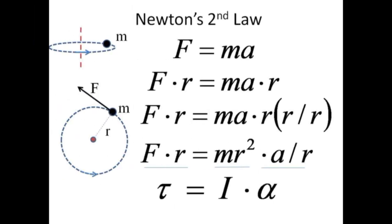Imagine a point particle with mass m rotating about some axis at a radius r. The tangential force and acceleration are related through Newton's second law, F equals ma. Multiplying both sides by the radius r, and then multiplying the right-hand side by 1 written as r divided by r, yields F times r equals mr squared times a divided by r.